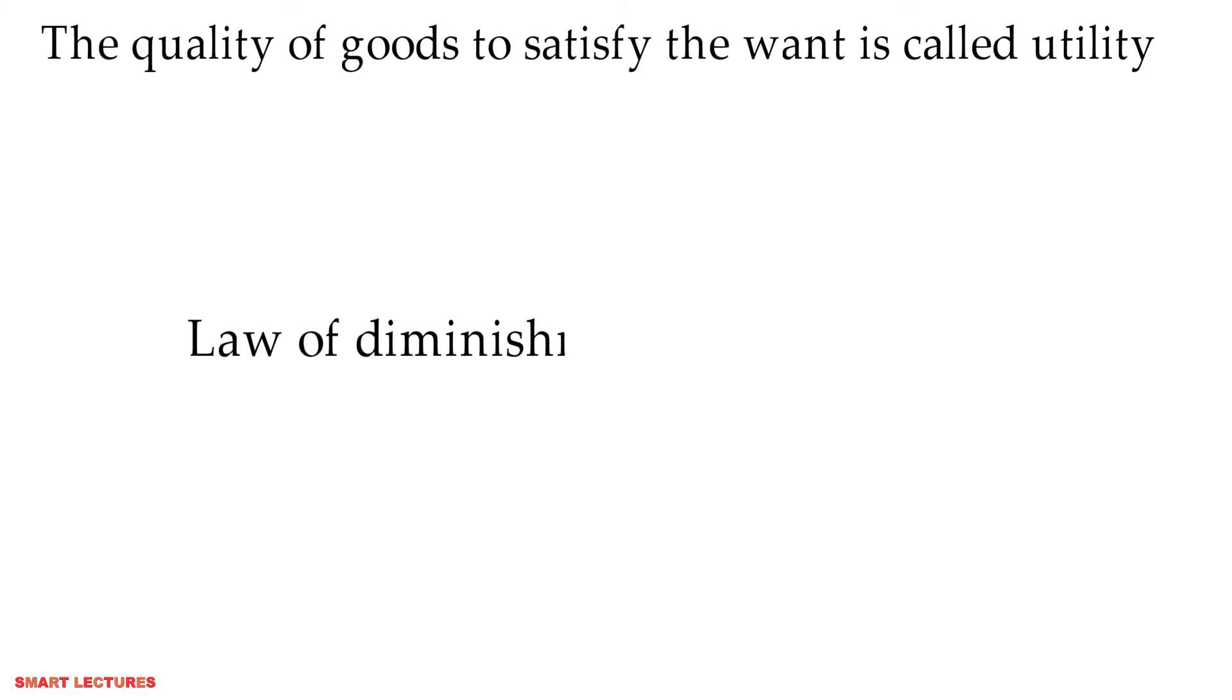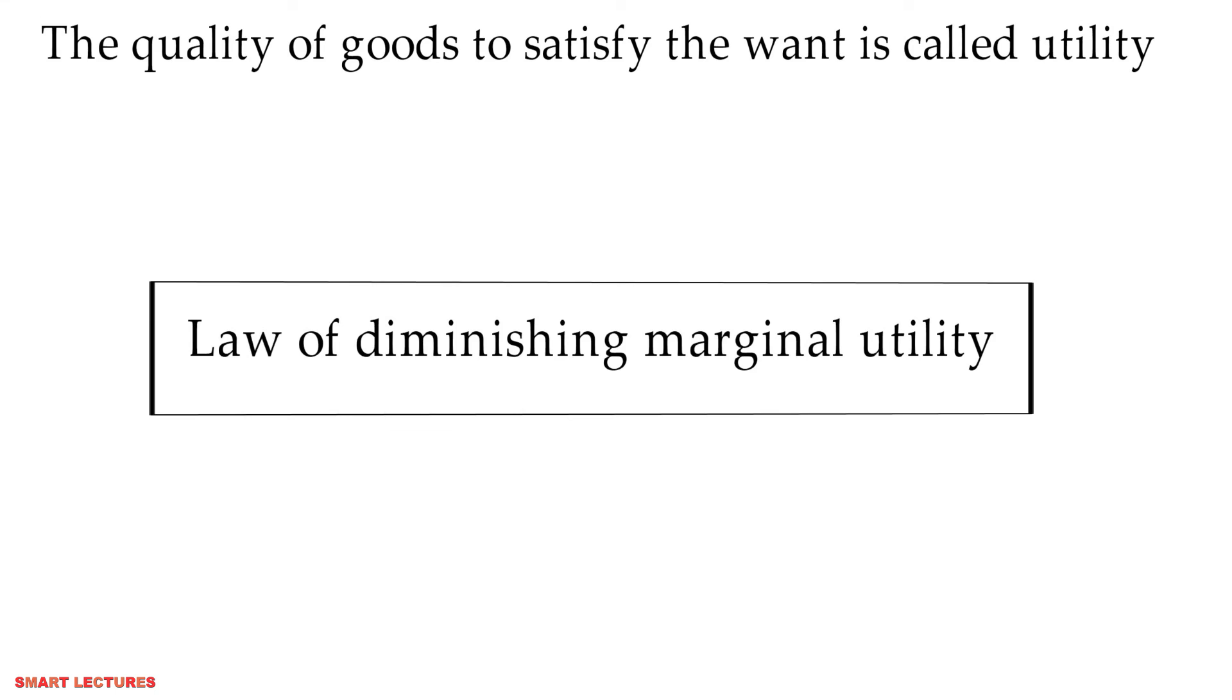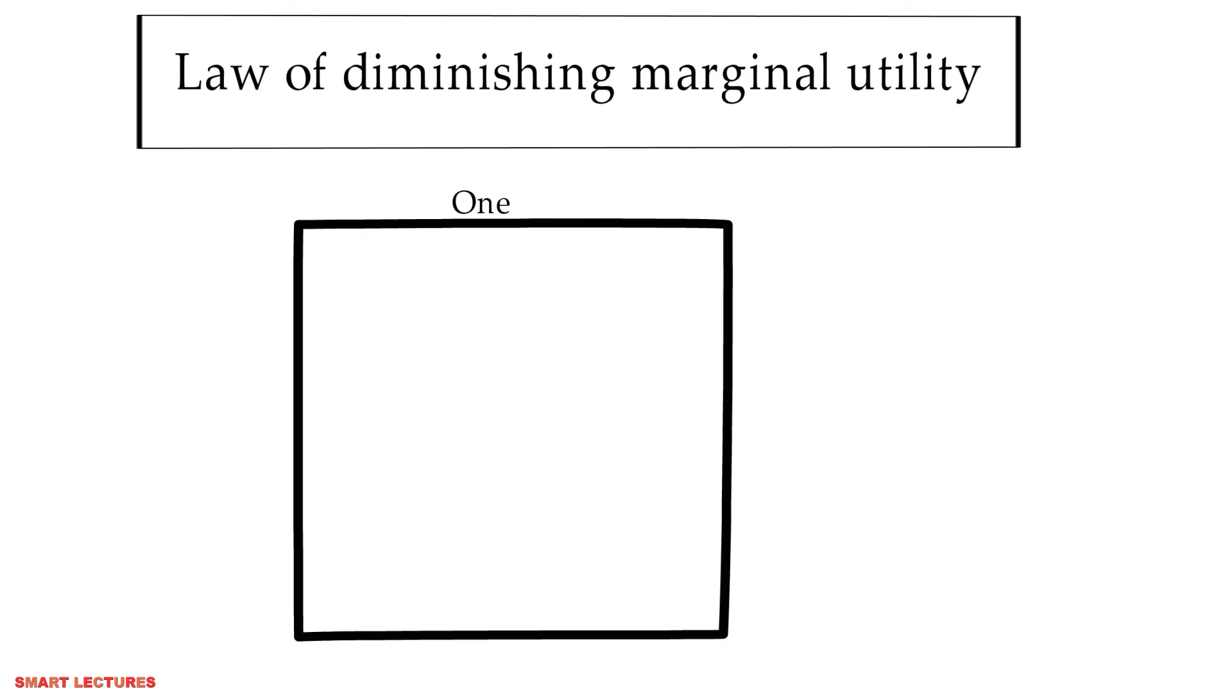We have already explained that the quality of goods to satisfy wants is called utility. And we have already explained the law of diminishing marginal utility. You must remember that in the law of diminishing marginal utility, there is only one item. If you keep on consuming the same item continuously, the utility of the additional or next unit keeps on decreasing.